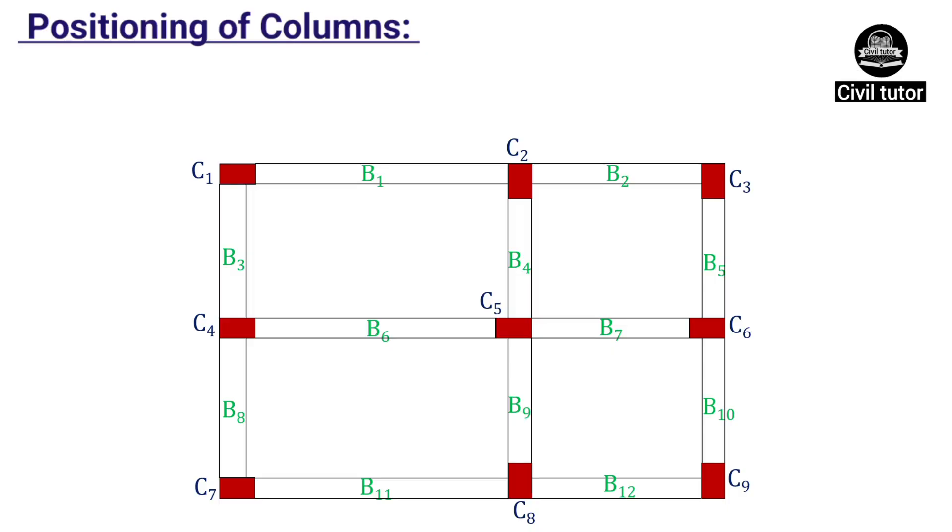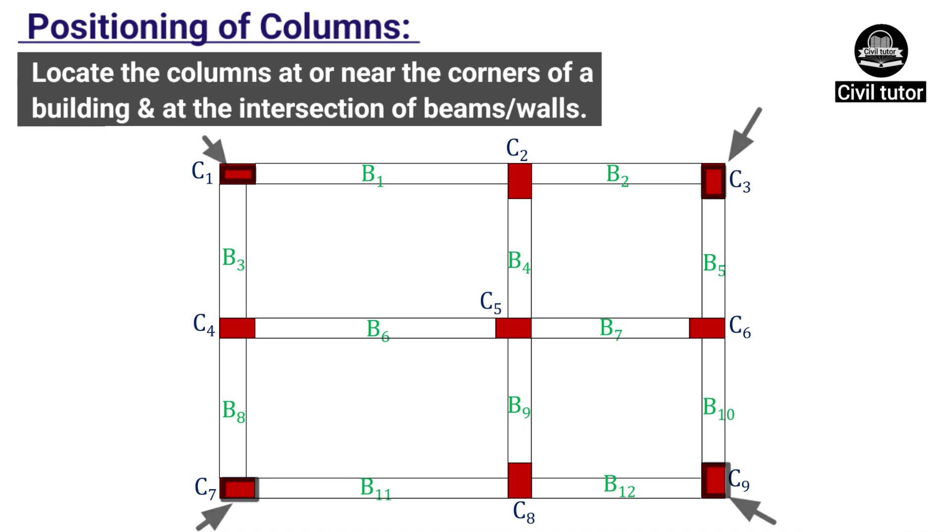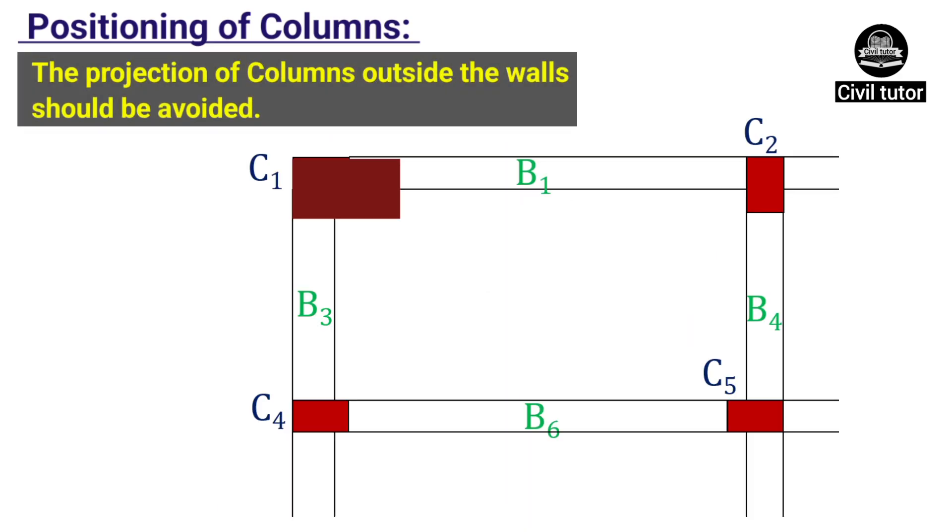To decide the position of columns, we have some guiding principles. It should always be preferred to locate the columns at or near the corners of a building and at the points where the beams or walls intersect, because the basic function of columns is to support the beams, which in turn support the walls. The projection of columns outside the walls should be avoided because this not only results in poor aesthetics but also leads to the loss of floor space.